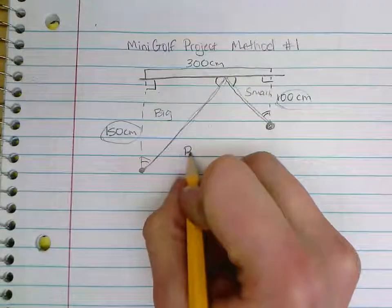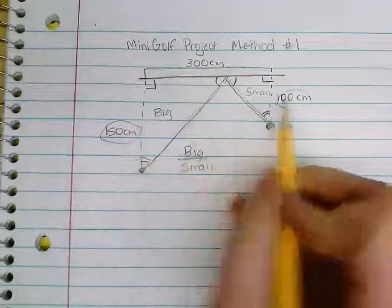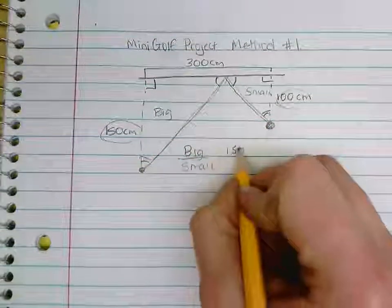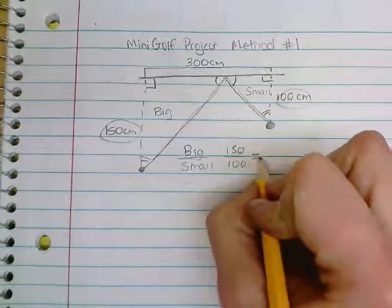Okay, I'm going to take my big triangle divided by the small triangle, and that gives me two measurements. Right now I know measurements of 150 and 100, and when I go to simplify this, this gives me a ratio of 1.5.